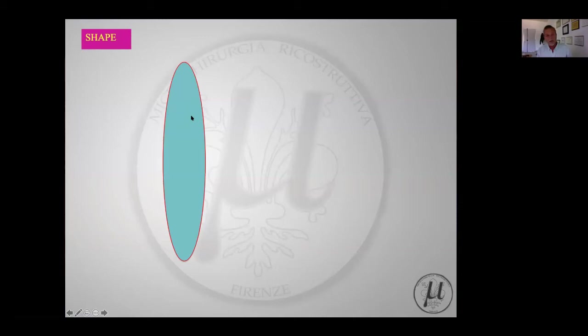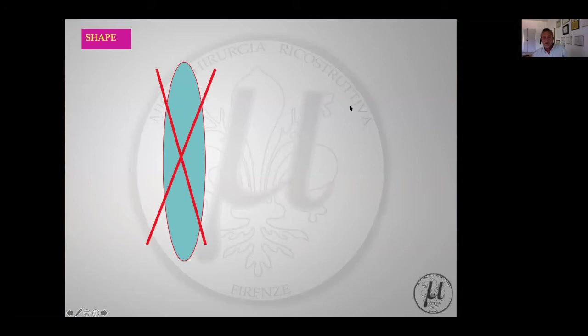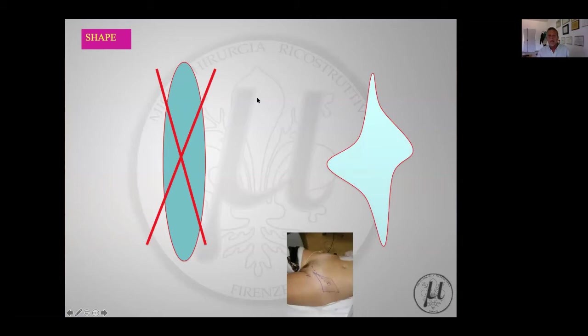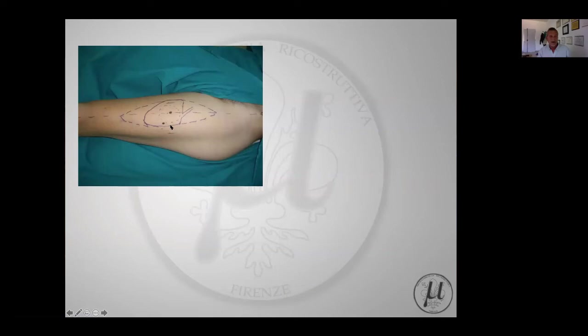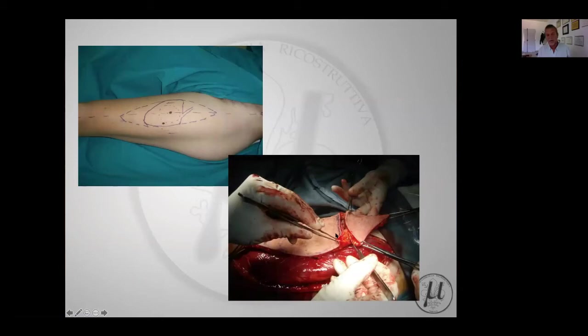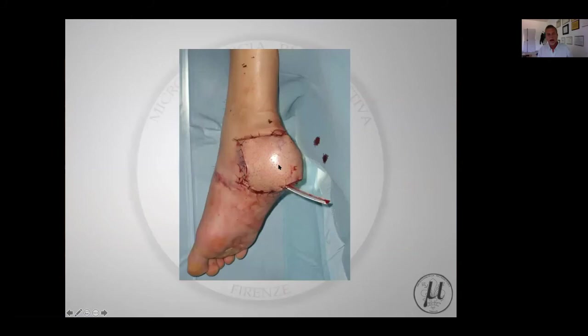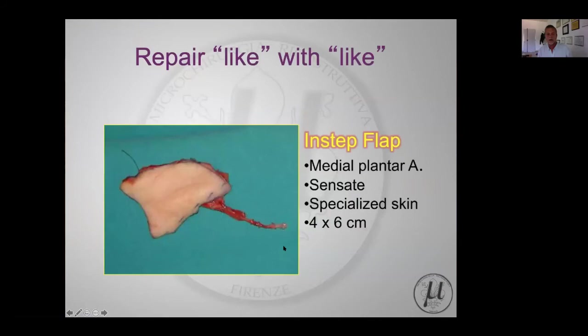Shape is also a variable with some impact on the cosmetics of our flap. We suggest, if possible, not to use a simple elliptical shape but to try to have a shape like a skip flap. This is an example of a heel injury where the ALT flap has been harvested and shaped accordingly to the recipient area - you see it's very nice.